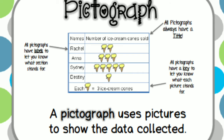Pictograph means data representation. Data representation is the method of representing information in terms of pictures, symbols, graphs or numbers. Do you know what is data? The information that we collect is called data. Jo information hum collect karte hai, usi ko hi hum data bolte hai.